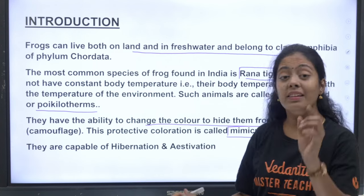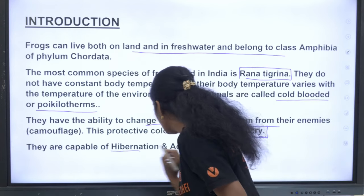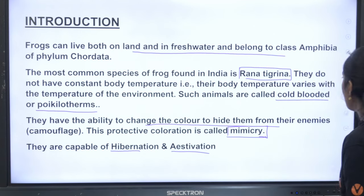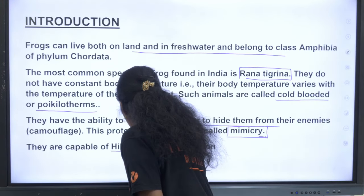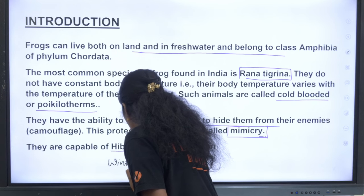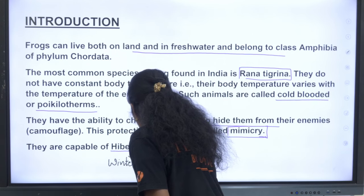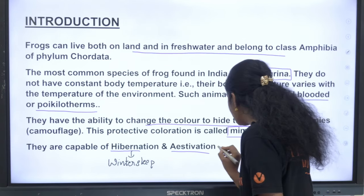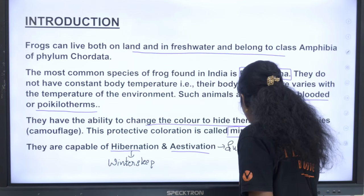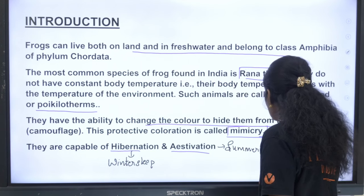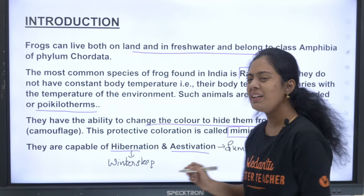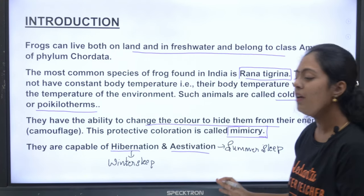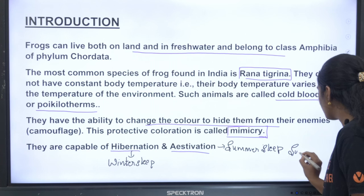They are capable of hibernation and estivation. Hibernation is winter sleep — during winter they go into a deep sleep. Estivation is summer sleep — when the summers are too hot, they go into a deep metabolically less active state. They are still alive but undergo a kind of suspension; they are not able to tolerate the surrounding temperature.